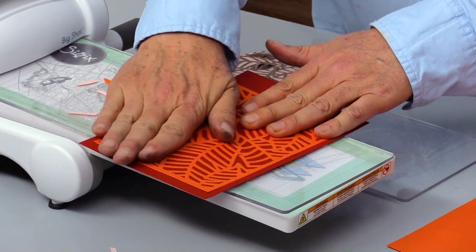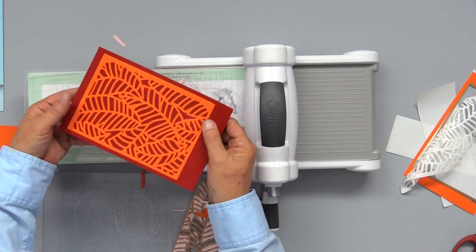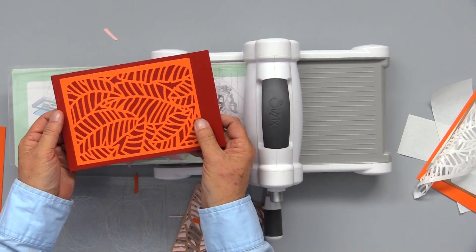And look how easy that is. Just like that, I glued that really intricate die cut to a piece of cardstock. Stick It. You're going to love it.